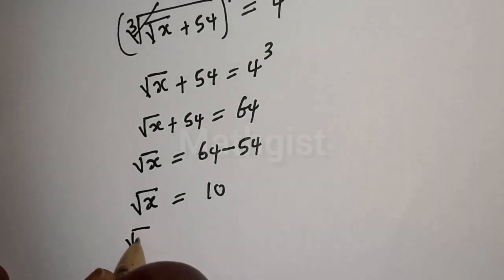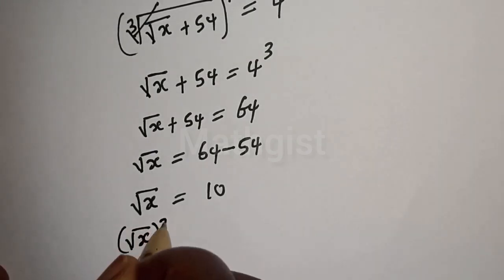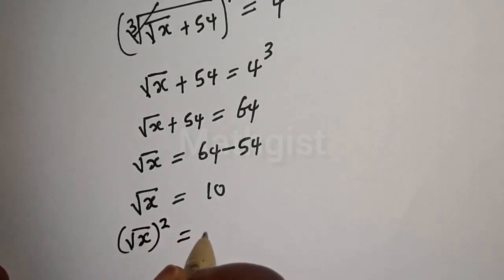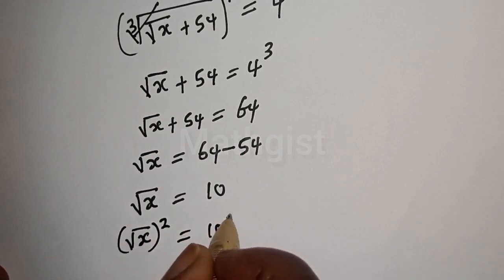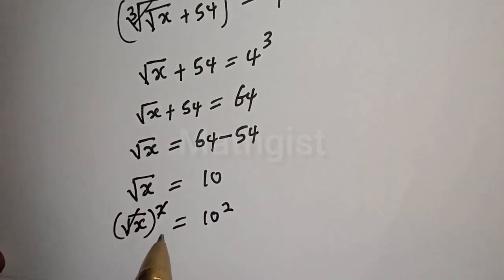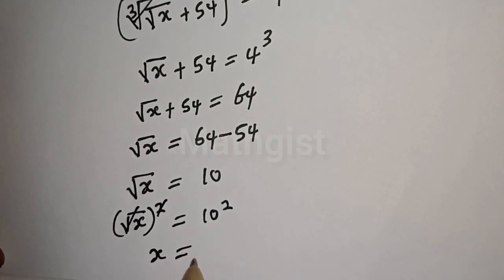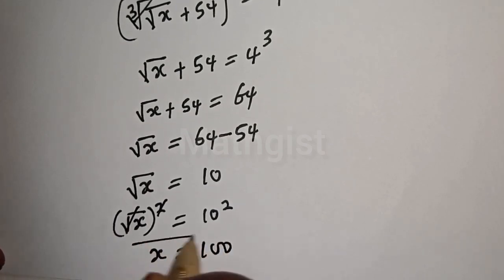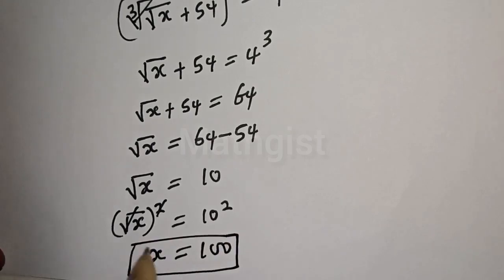Square both sides: square root of s plus 54 squared equals 64 squared, which gives s plus 54 equals 4096... then we get s equals 100. Wait — squaring 10: root of s plus 54 equals 10 squared equals 100, so s equals 100. This is the final answer.